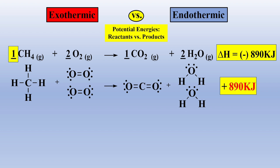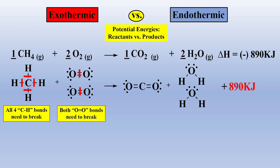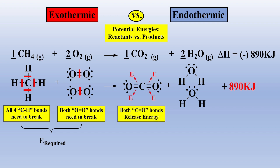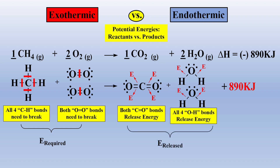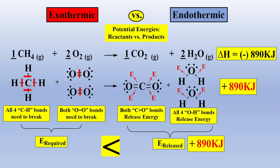Specifically, 890 kilojoules of energy are released when one mole of methane is combusted. For this reaction to proceed, carbon-hydrogen bonds will need to break, and doubly bonded oxygens will need to break, which will require energy. When the new carbon-oxygen double bonds form within carbon dioxide, and when the new hydrogen-oxygen bonds form within the water molecules, energy will be released. When we compare the change in potential energy stored in the chemical bonds — that is, the amount of energy required to break the bonds of reactants and the amount of energy released as the new bonds of the products form — we see that the amount of energy released when the products formed is greater by 890 kilojoules. Thus, we now have a fourth way of stating an exothermic reaction: the amount of energy required to break bonds of reactants is less than the amount of energy released as the new bonds of products are formed.